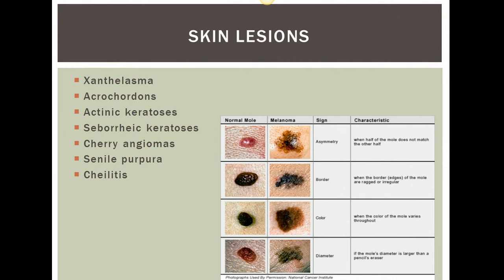Seborrheic keratosis are benign wart-like lesions. Cherry angiomas are vascular lesions — tiny red spots. Senile purpura are also vascular lesions; they involve fragile blood vessels, presenting as red to purple spots, and are essentially ruptured capillaries. Cheilitis is an angular stomatitis, and it can be due to increased saliva.